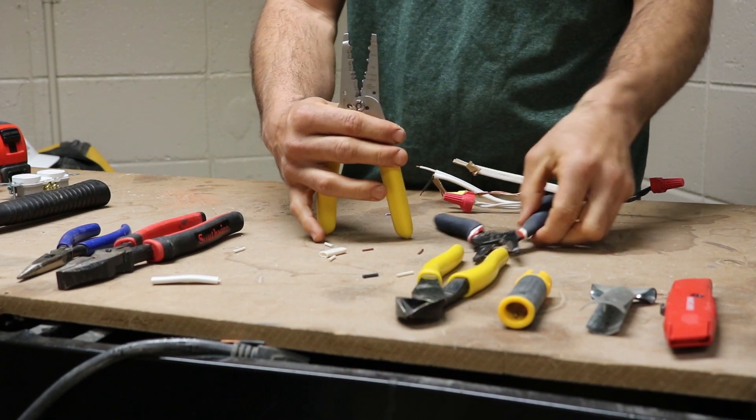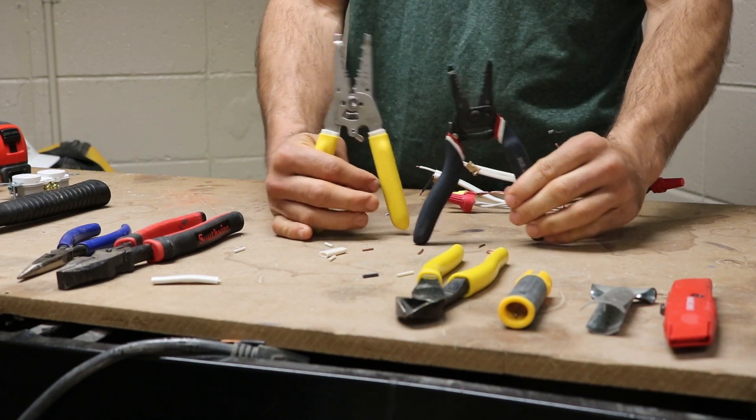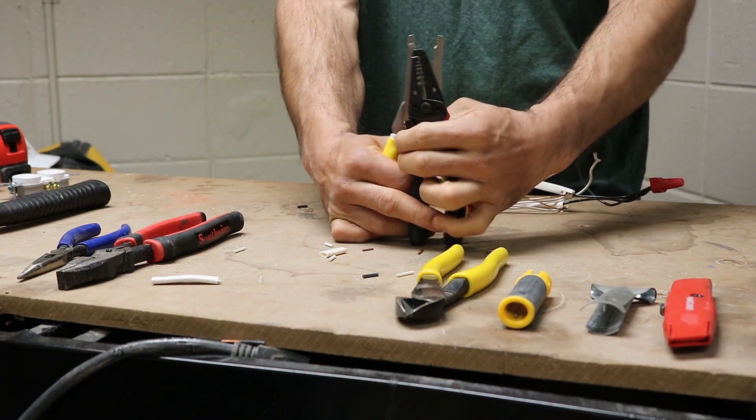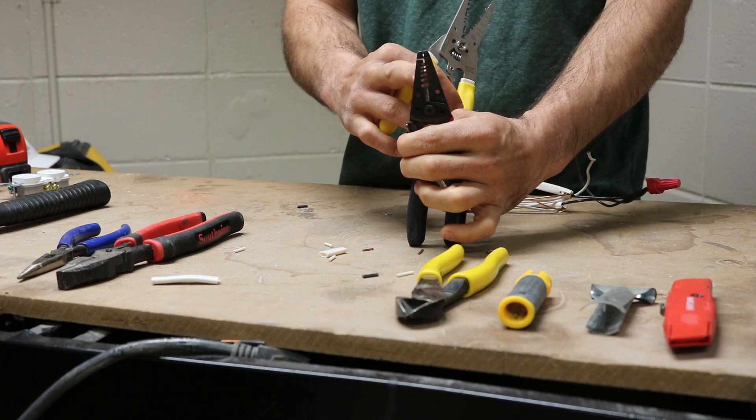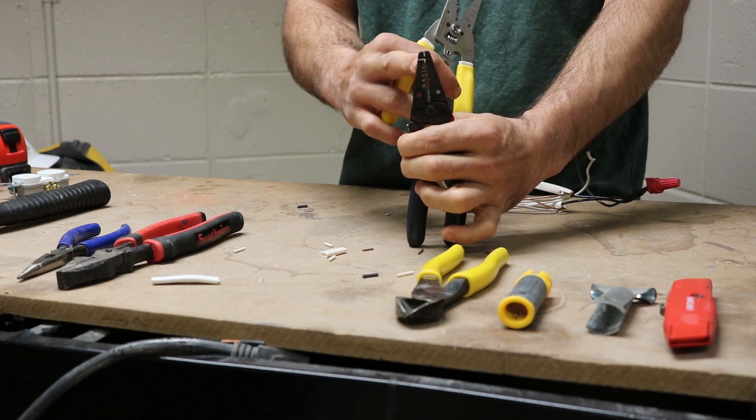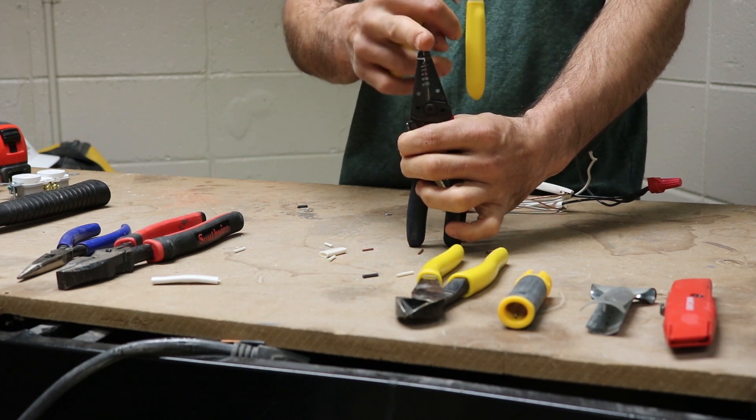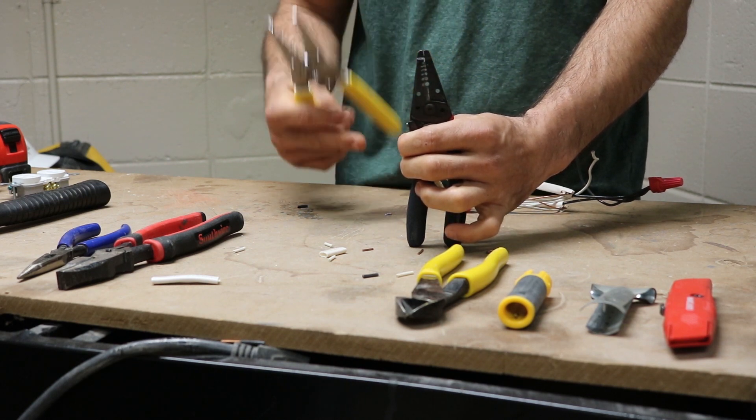So those are your wire strippers. Like I said before, the main thing they're used for, they have cutters. Then each little hole is dedicated for the gauge of wire. And then it also has almost like some little needle-nose pliers on the top side.